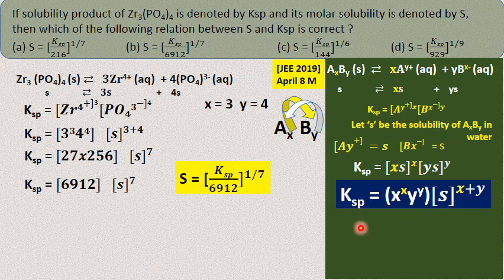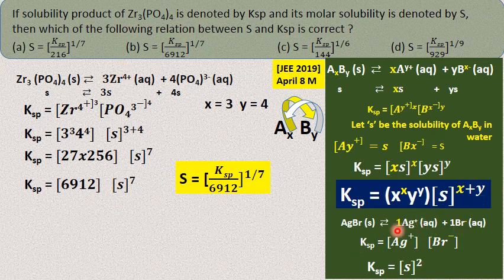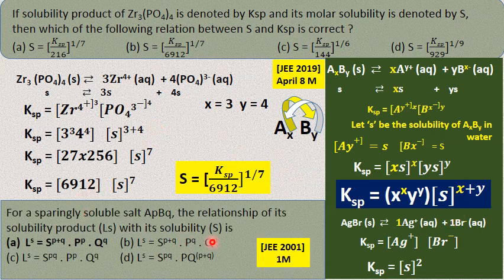Remember: Ksp = X^X × Y^Y × S^(X+Y), where X and Y are the number of cations and anions. For a 1:1 salt (X = Y = 1), Ksp = S². For a general salt APBQ (from JEE 2001), Ksp = P^P × Q^Q × S^(P+Q), which gives S = [Ksp / (P^P × Q^Q)]^(1/(P+Q)). This is one of the most important relationships expected in competitive examinations.